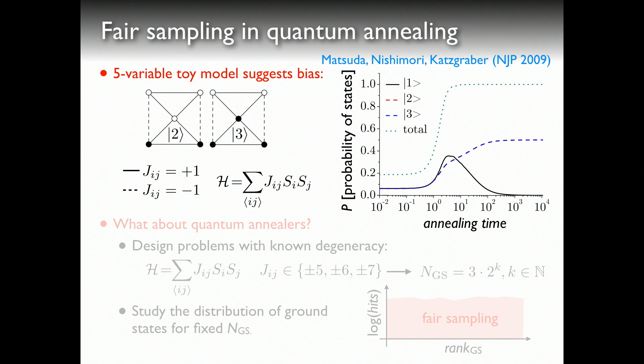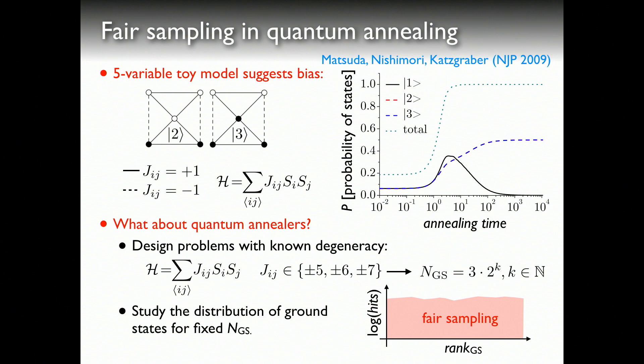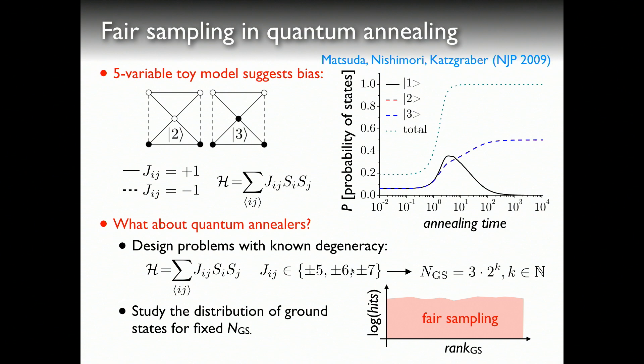Last year we thought, with Salvatore, what about quantum annealers? We decided to design problems with known degeneracy, picking couplers according to a distribution of five, six, seven, because it gives relatively small and manageable degeneracies. You can then generate several hundred thousand problems, exhaustively try other methods to find all possible solutions, and then use this well-curated data set to see if quantum annealing or the D-Wave device can find the solutions.